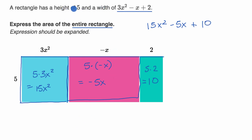Now I know what some of you are thinking. If I know that the height is 5, and the width is this value, well, couldn't I have just multiplied height times the entire width, 3x² - x + 2, and then I would have just naturally distributed the 5, and essentially that's exactly what we did here.